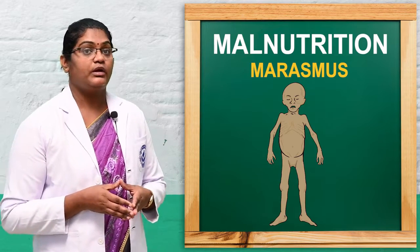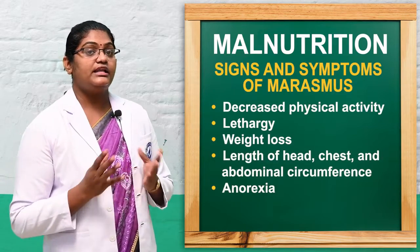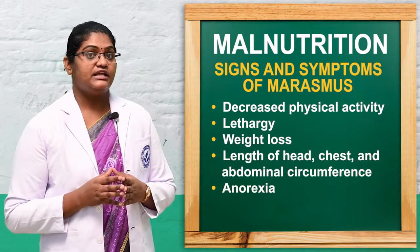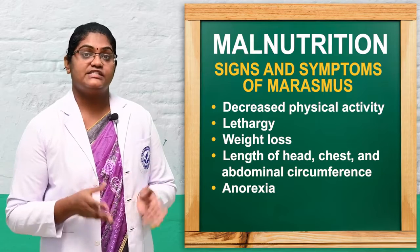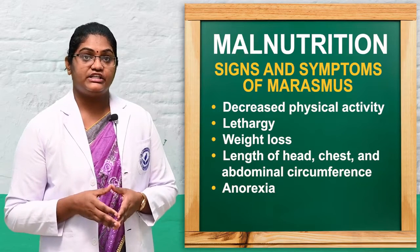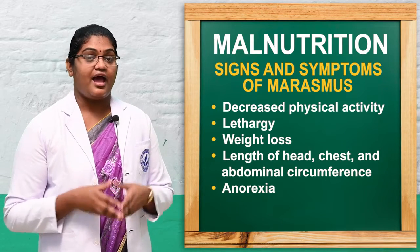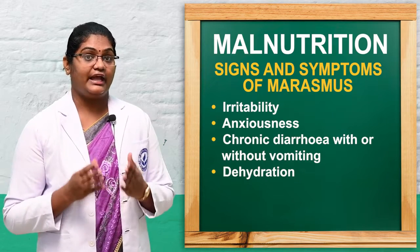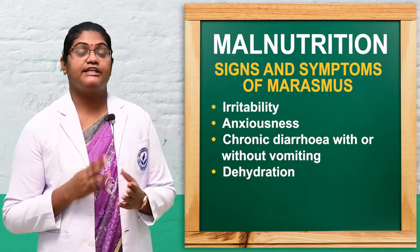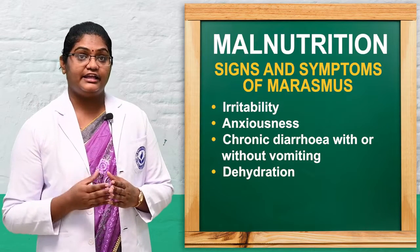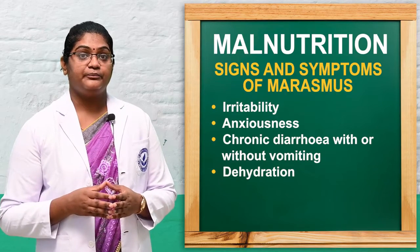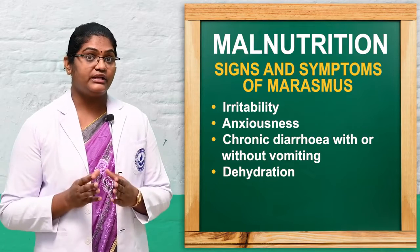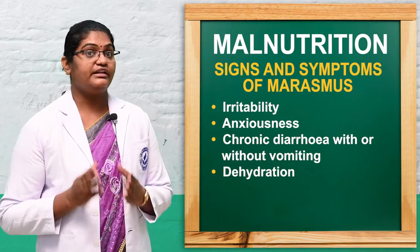The clinical features of marasmus include lack of physical activity, lethargy, anorexia, anxiety, irritability, increased lung, head, chest, and abdominal circumference, and diarrhea with or without vomiting and dehydration. These are the common symptoms of a patient with marasmus.